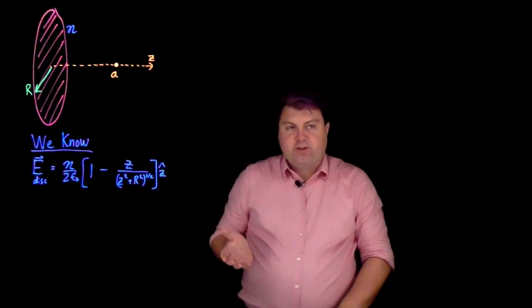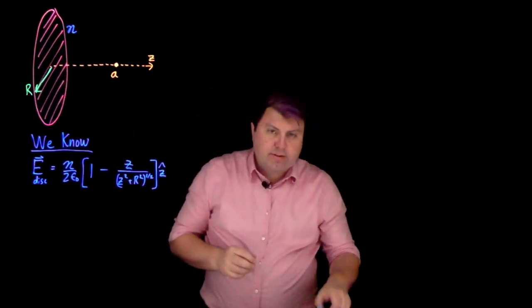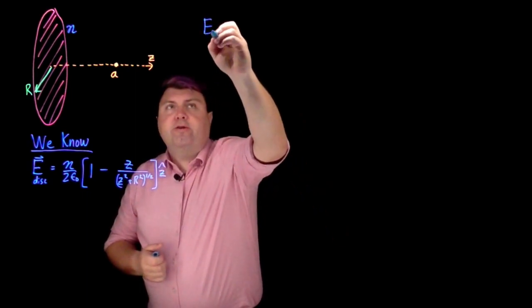So if we want to find the electric potential of the disk, we can use superposition and add up rings, but we can also use our definition of electric potential.